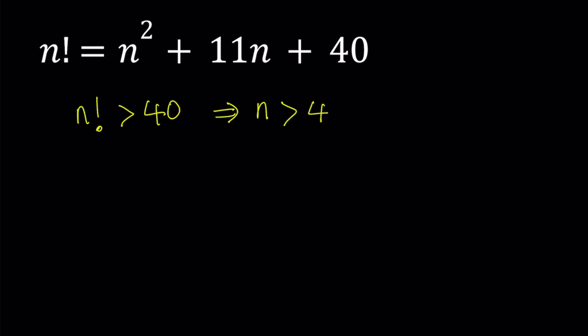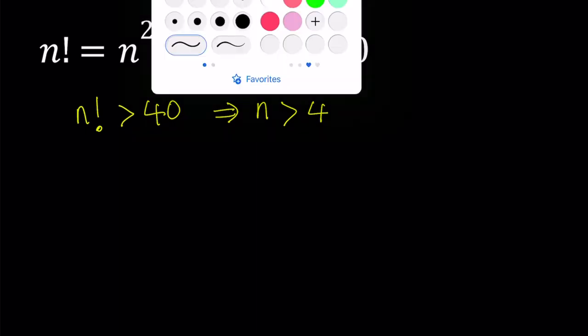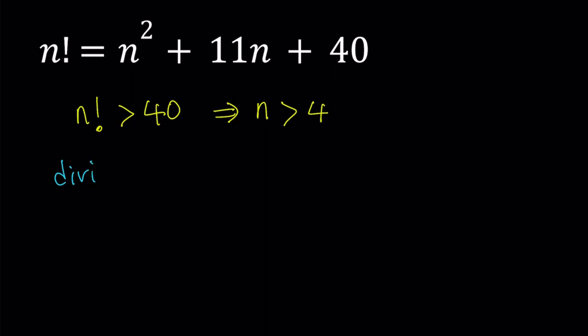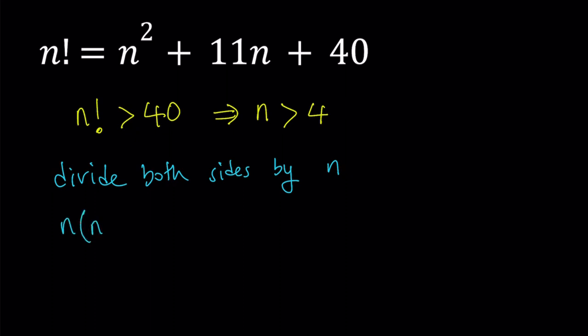And let's divide both sides by n. And why are we doing that? Because that's going to allow us to use the divisibility criteria. And it also shows us something interesting. So n factorial can be written as n times n minus 1 factorial. Let's go ahead and do that first.